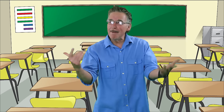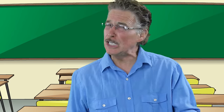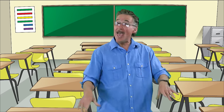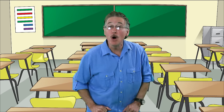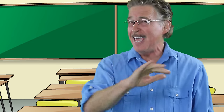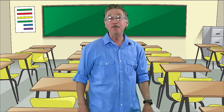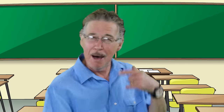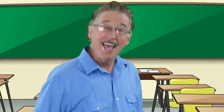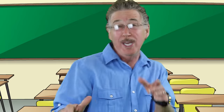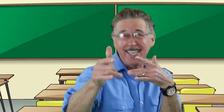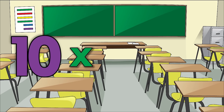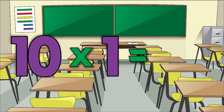To multiply by ten, you take the number then add a zero to the end. That's the end. To multiply by ten, you take the number then add a zero to the end. That's the end. Ten times one is ten.